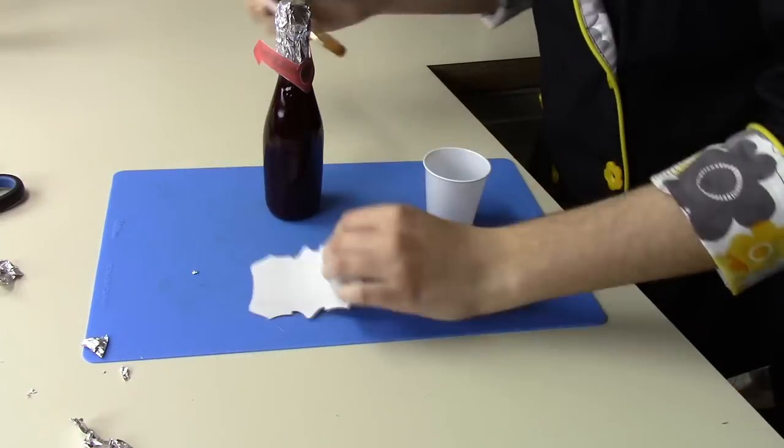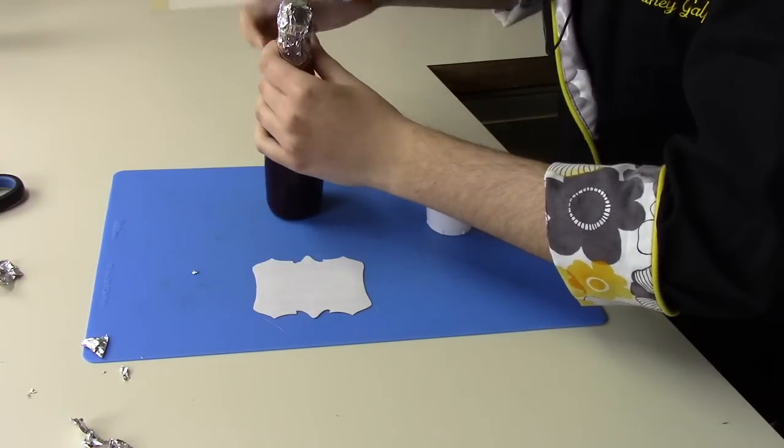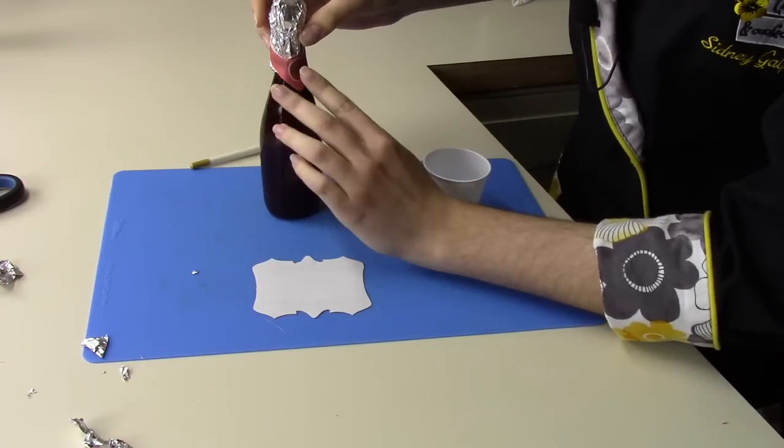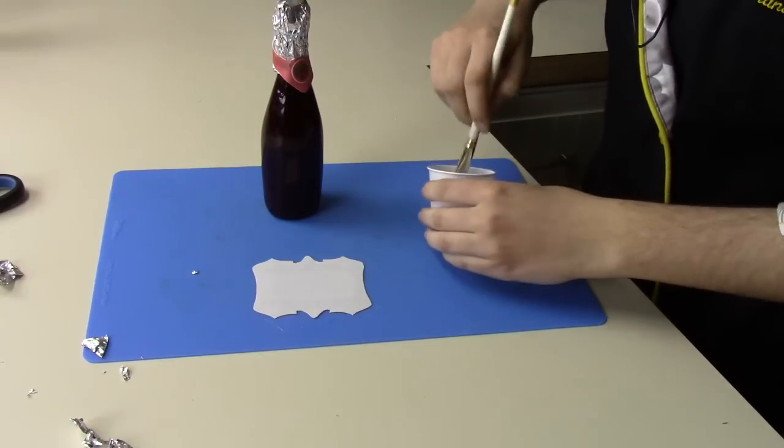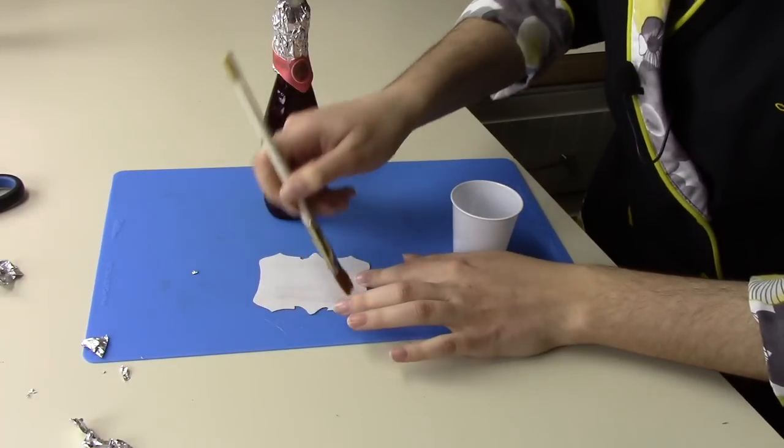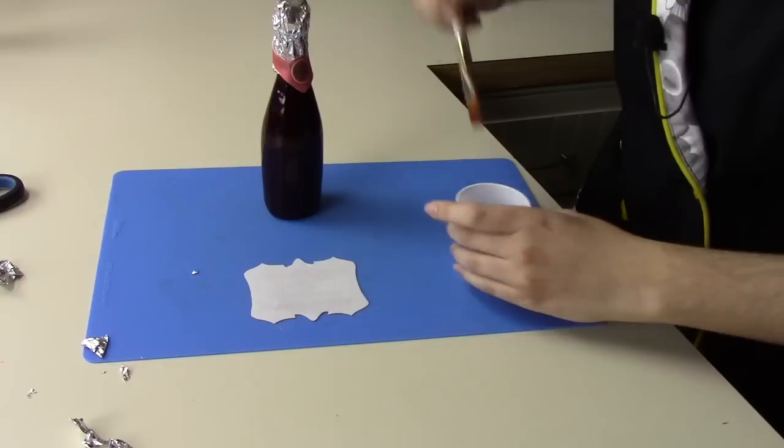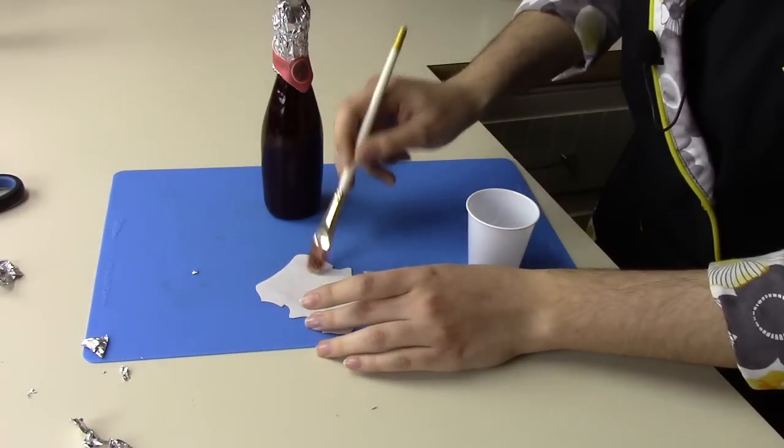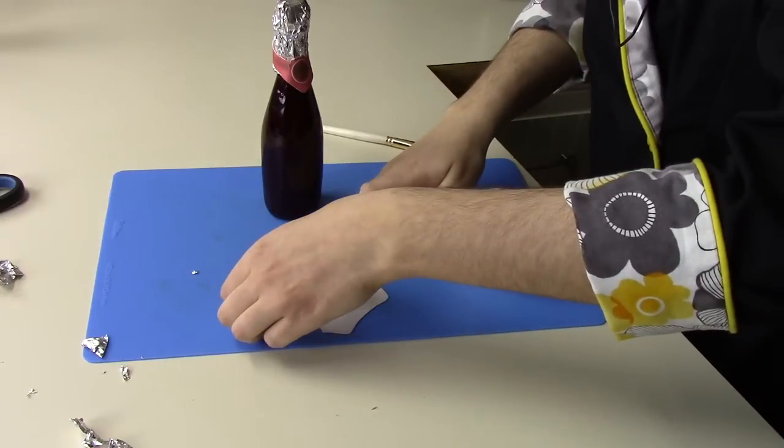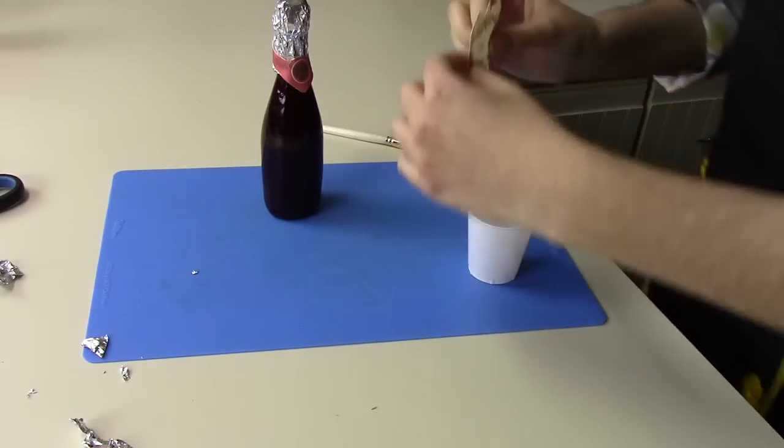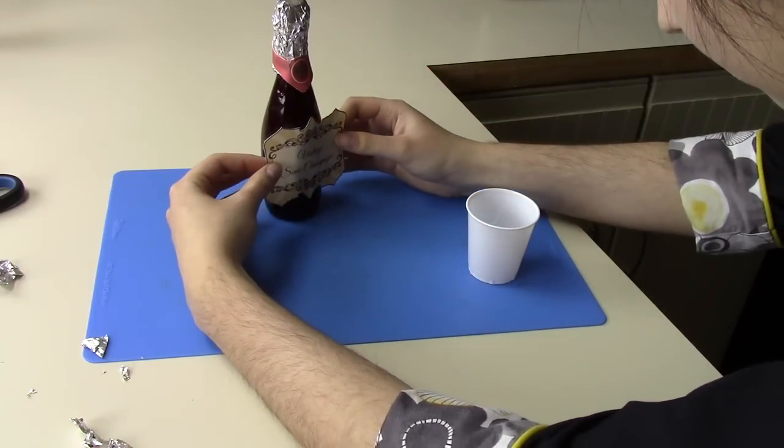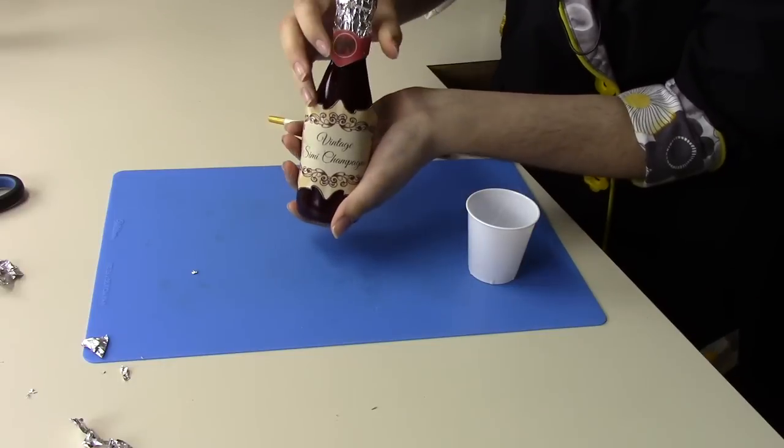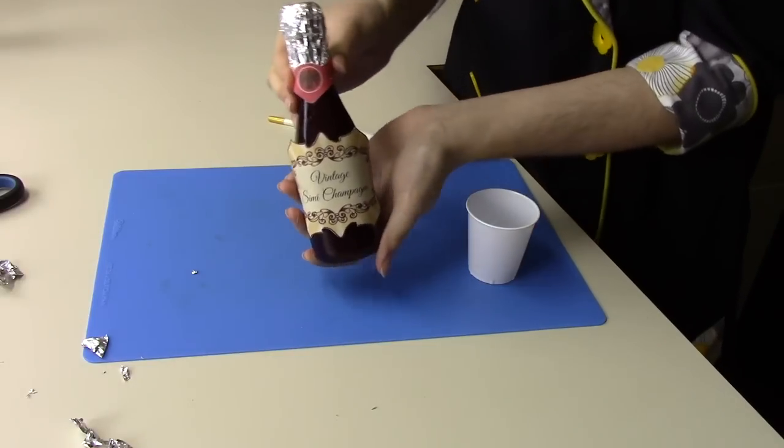And now we have our front label. Just hold this for a second to make sure it's set up. And the same thing with our front label, especially on those edges so that they stick down. Right around here. And I will just hold this on the bottle for a moment to dry. And then you have your champagne bottle.